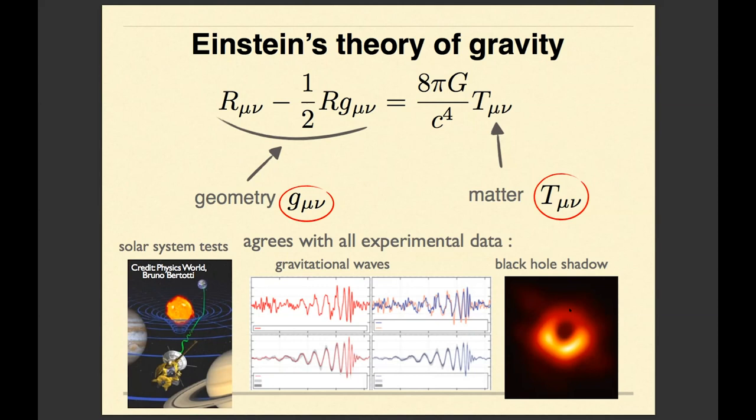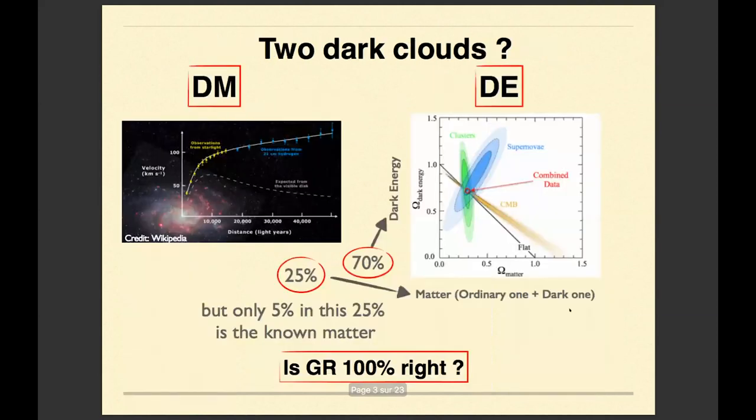So everything looks fine, but there are two dark clouds on the perfect blue sky of general relativity. The first dark cloud is related to the fact that if we look at some galaxy, it can be our galaxy or any other galaxy.